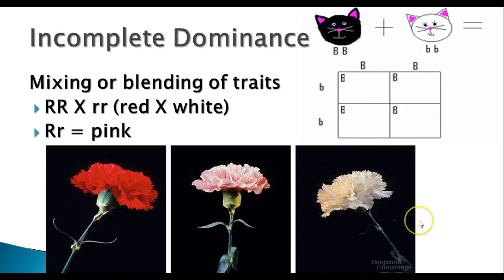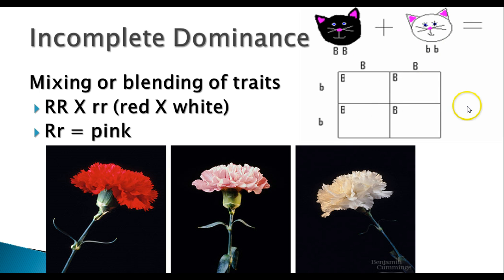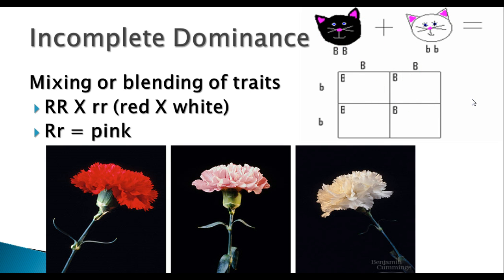Another example: carnations also show incomplete dominance — you have red, white, and pink. There's also a cute illustration using cats to show that in incomplete dominance you'd have a blending of black and white into gray. Cat fur color doesn't actually work like that, so don't think that's really what that means — it's just an illustration.